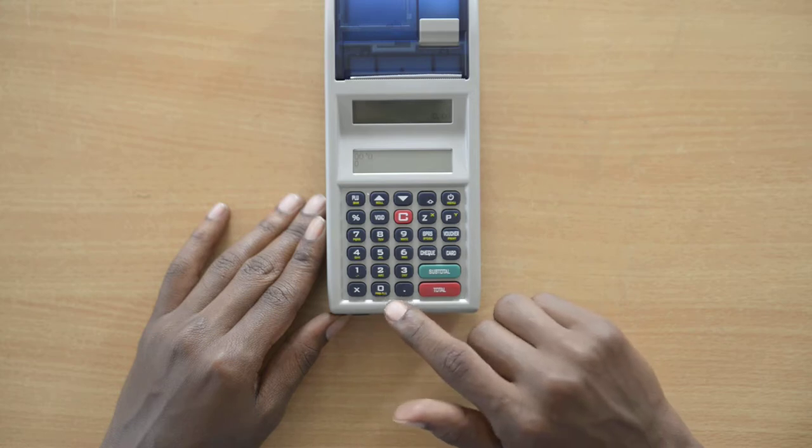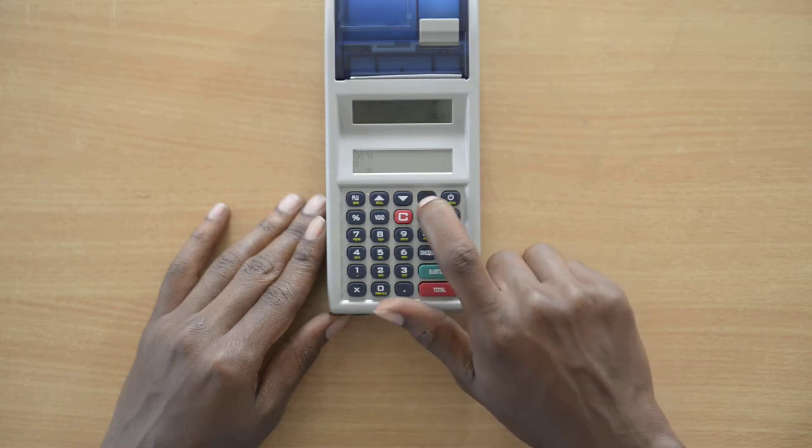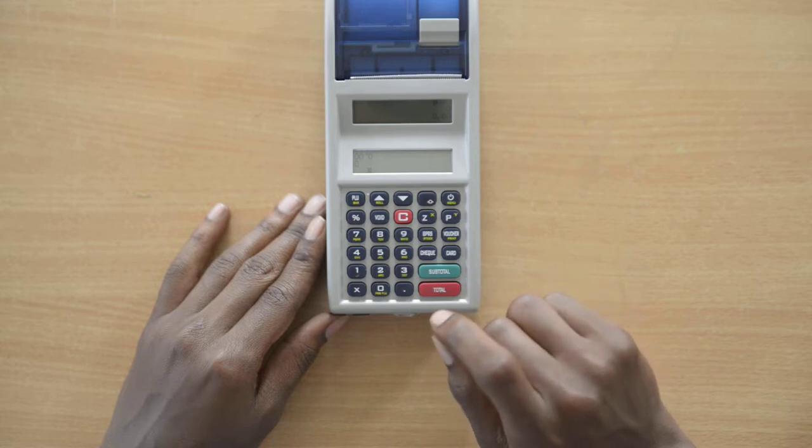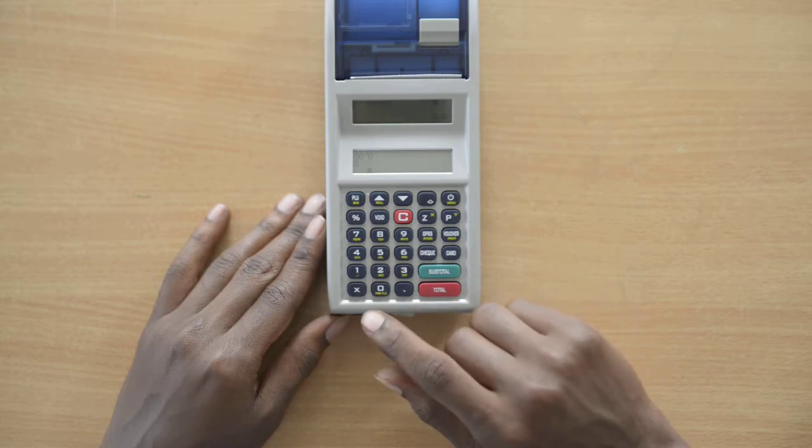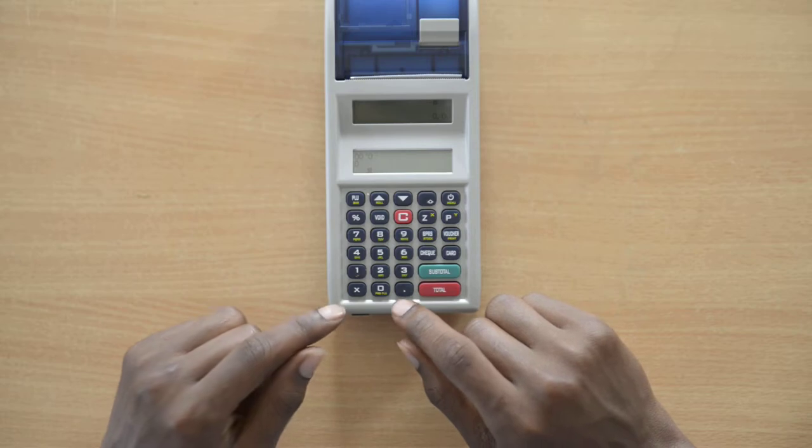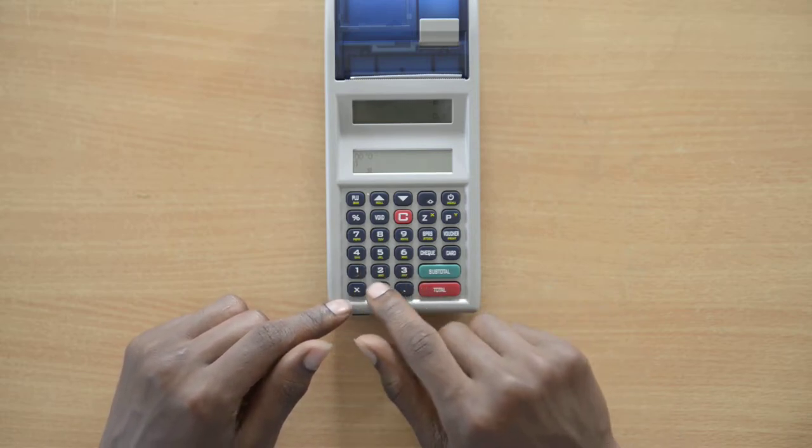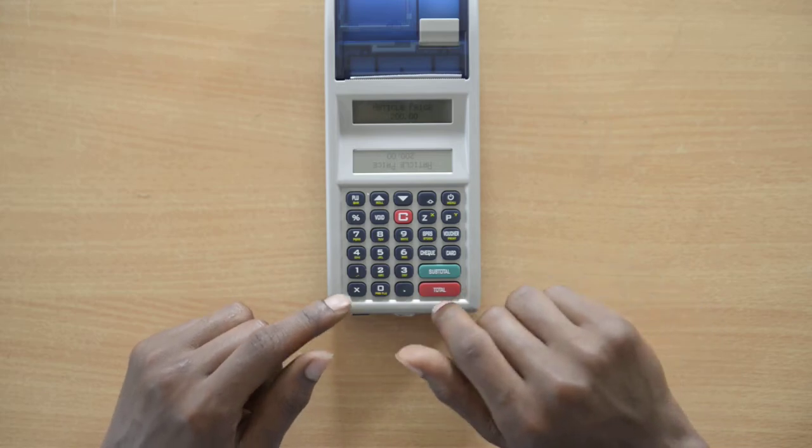Before putting the code number of the item, you press this button which is shift. Then you put the code number of the item, which is number 10 or number 20 or number 30, for example. Once you select number 10, for example.